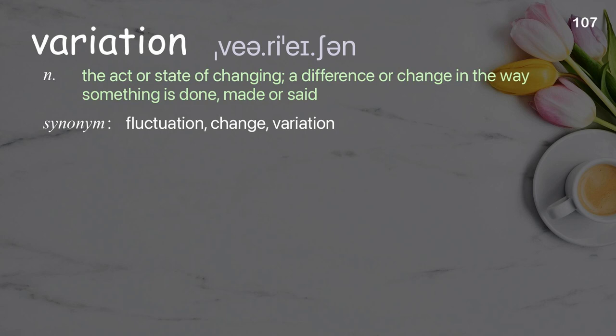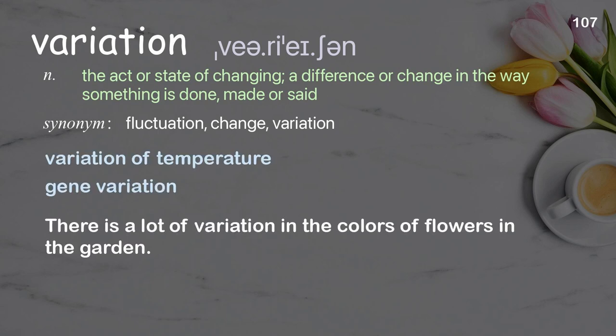Variation: The act or state of changing; a difference or change in the way something is done, made, or said. Examples: Variation of temperature. Gene variation. There is a lot of variation in the colors of flowers in the garden.